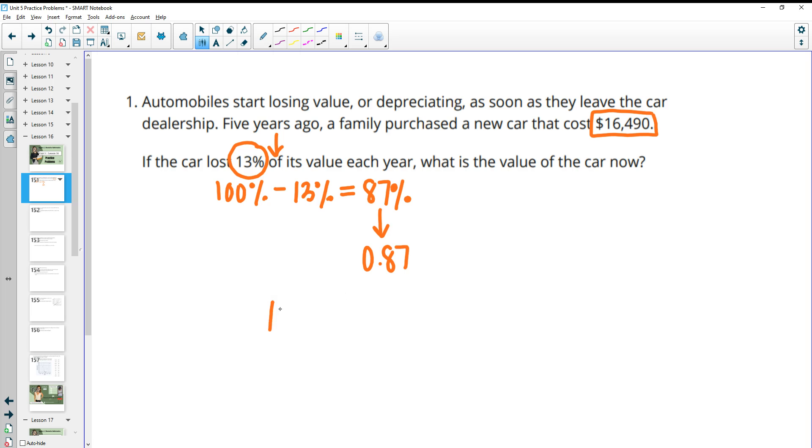So then we want to do $16,490 times 0.87. And then what's the value of the car now? They bought the car five years ago, so that's how long it's been. So we'll do this to the fifth power. When we type that into our calculator, we find out that the car is currently worth $8,218.96.